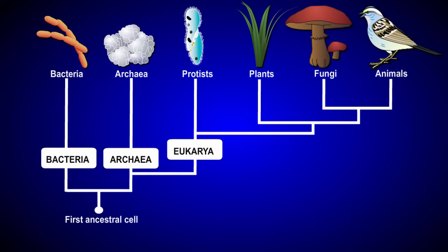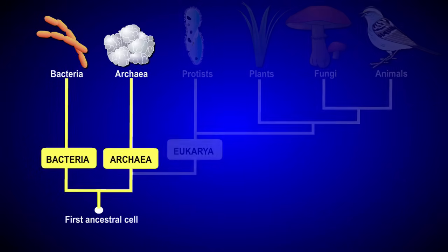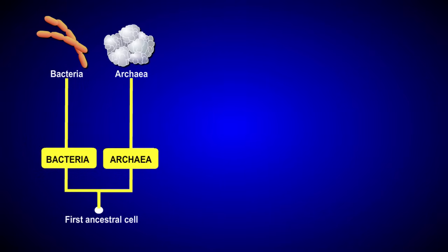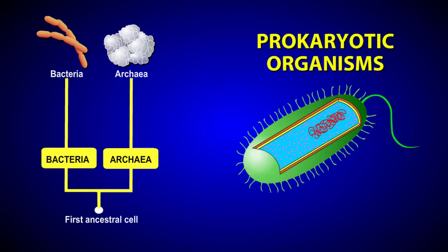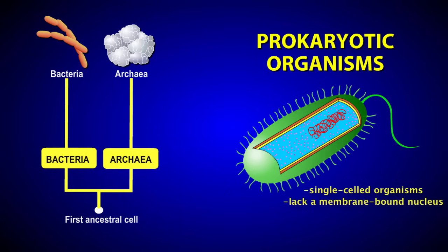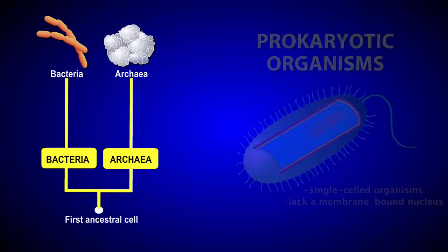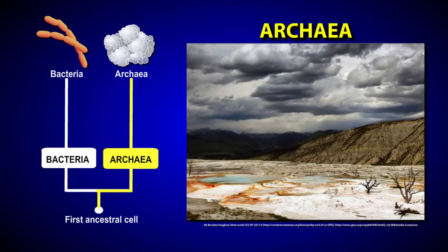Two of the three domains, domain bacteria and domain archaea, contain prokaryotic organisms. These are single-celled organisms that do not have a membrane-bound nucleus. Archaea live in aquatic environments that lack oxygen or are too salty, too hot, or too acidic for most organisms.